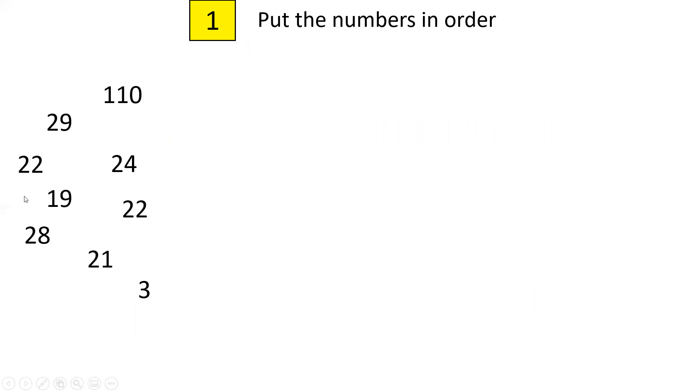How do we actually work out the interquartile range? Let's use the numbers from earlier. So here we've got the nine numbers again. First thing we do is we put the numbers in order from lowest to highest. We go from 3 up to 110.